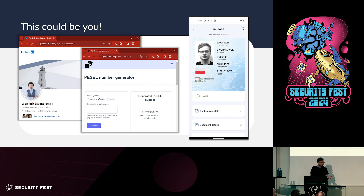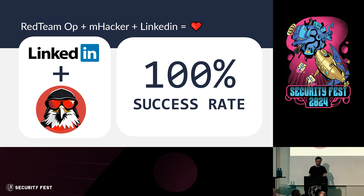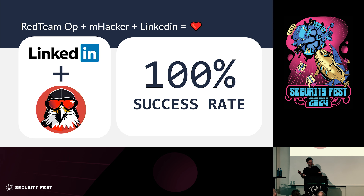This is actually one of the scenarios we use during physical penetration testing. When we're asked to break into an organization's office and plant malicious hardware, the scenario that always works is: we go to the organization's LinkedIn, find an employee who is new to the company so his face isn't easily recognized, use the mHacker app to change our name to that person, then walk to the lobby and say 'I lost my badge, can you give me a temporary one? Here's my ID.' It works every time.